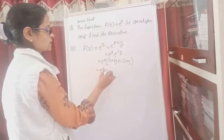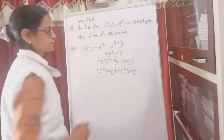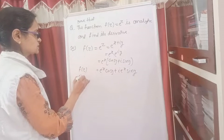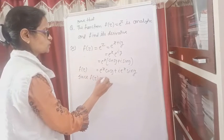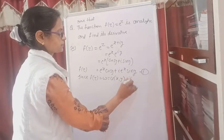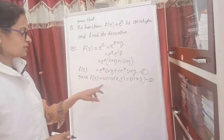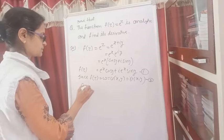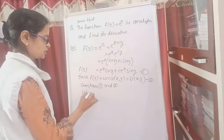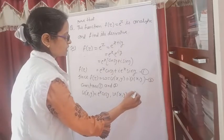Separating them, we get e to the power x·cos y plus i·e to the power x·sin y. Here we can see the real and imaginary parts. Comparing with f = u + i·v, we get u(x, y) = e to the power x·cos y, and v(x, y) = e to the power x·sin y.